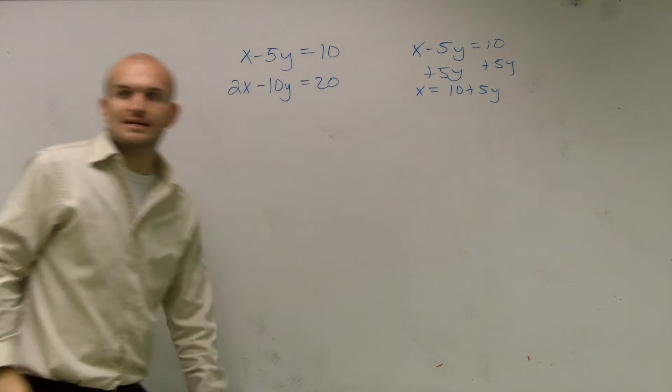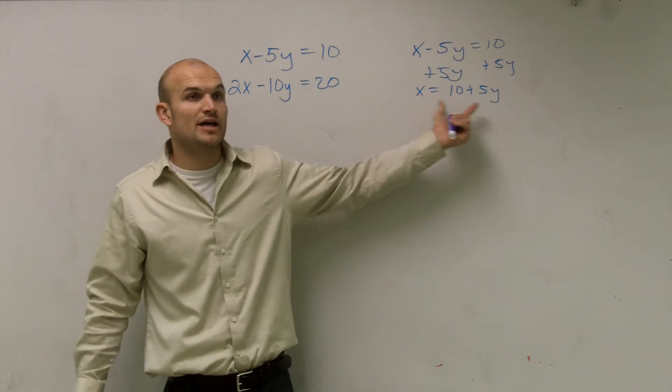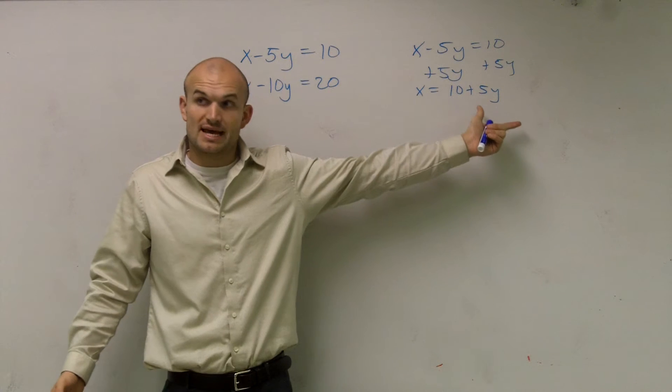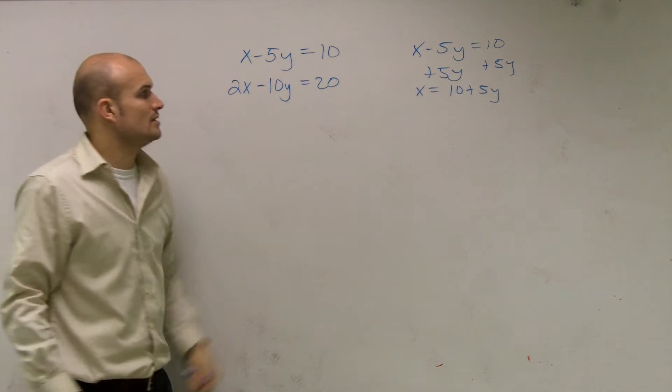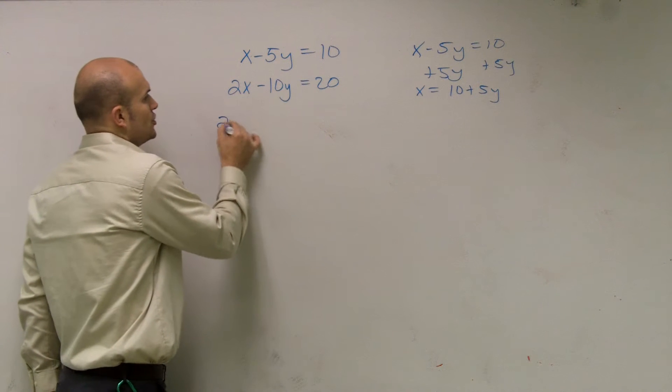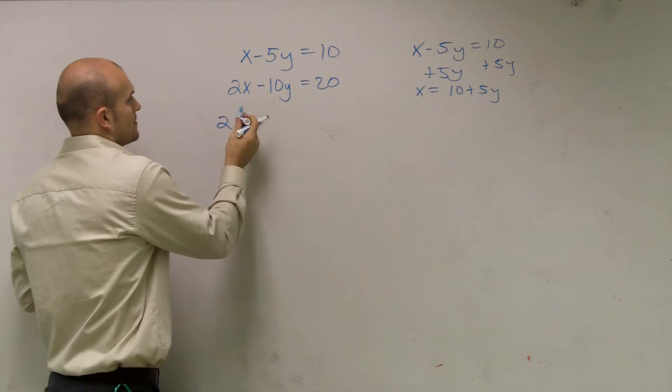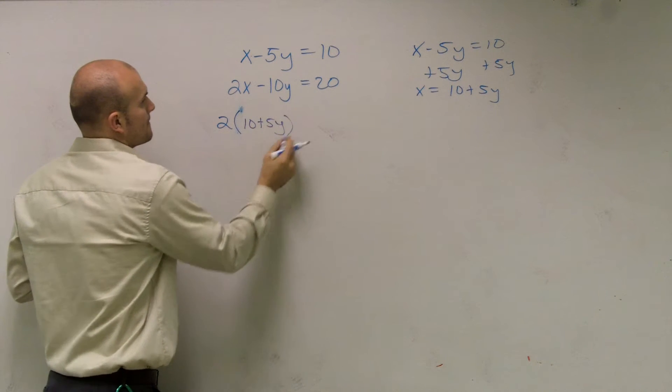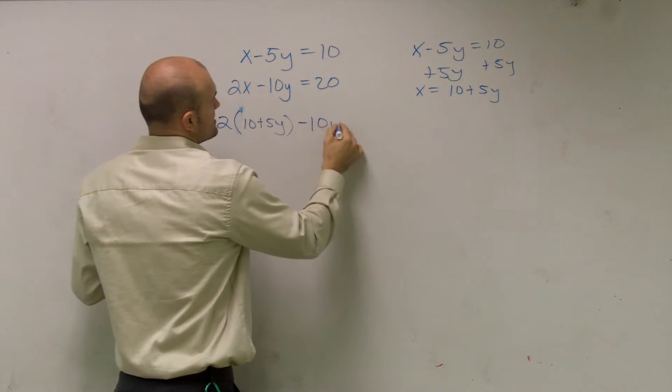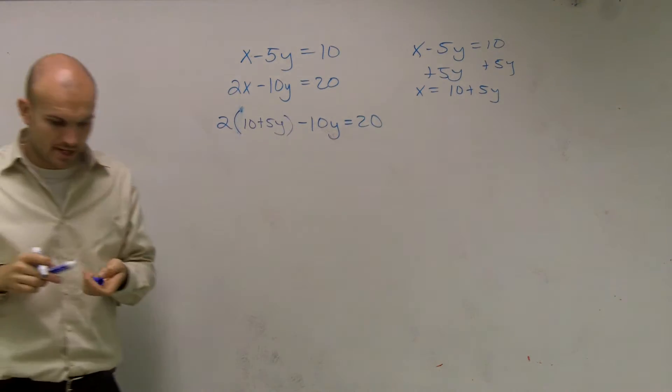Now, the next thing that I'm going to do is—remember I need to substitute in the value of x, which is 10 plus 5y. I'm going to substitute that in for the other equation. So, when I do that, I get 2, I don't want to write times x, but times 10 plus 5y minus 10y equals 20.